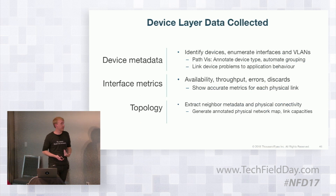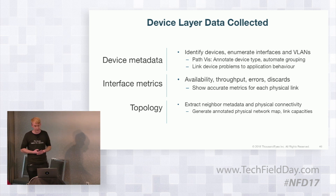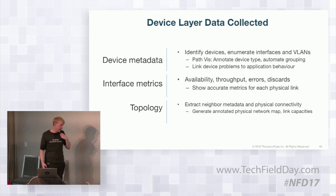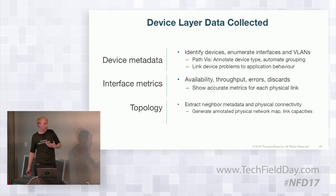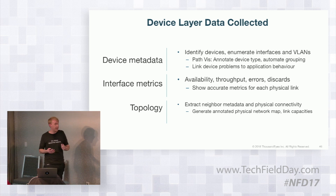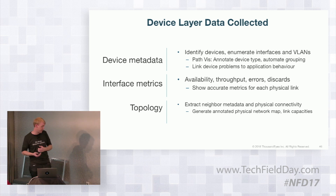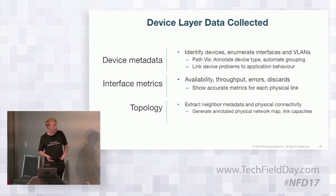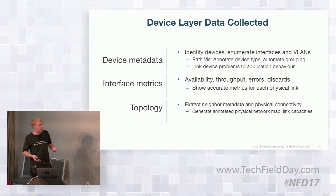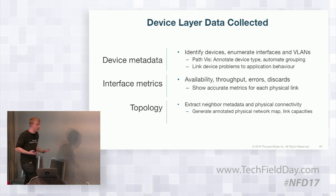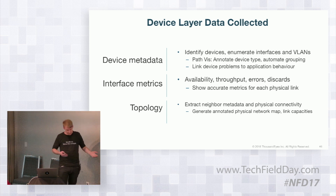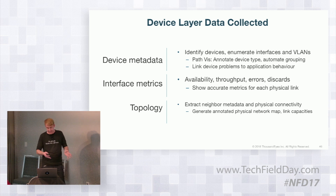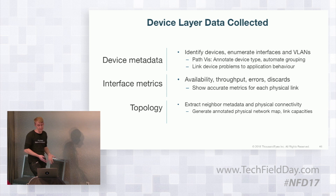So what data are we able to collect from devices currently? We pull a lot of device metadata — the device names, not just the hostnames of their interfaces, but the names themselves that you would configure them by. The interface names as well — you can say, this link is actually the VLAN to Bob's desk or something along those lines. This helps you get more context on where things are in the network. When you see the path visualization, you can now see exactly what specific things are and go from your application behavior down to the individual devices.